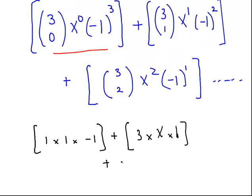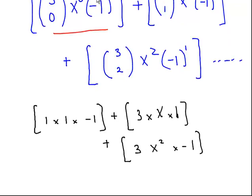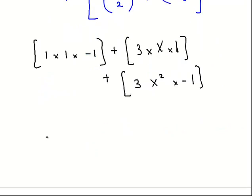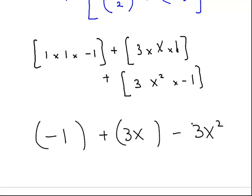And the next term there, from 3 choose 2, that's 3 also, x squared, times minus 1. And working that out, I would get minus 1 plus 3x minus 3x squared, and so on. There's actually only one more term, but I'm going to leave it.